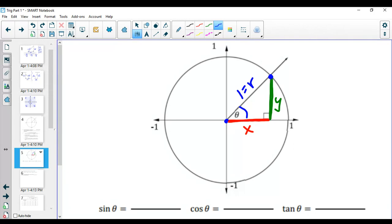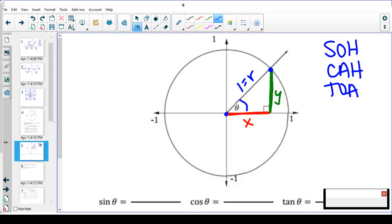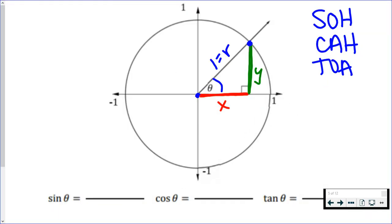This goes back to our SOHCAHTOA. Remember, sine is opposite over hypotenuse. So if I want the sine of my angle in here, theta, the sine of this angle would be opposite over hypotenuse. The opposite would be Y, and the hypotenuse is just 1, so that would be Y over 1.